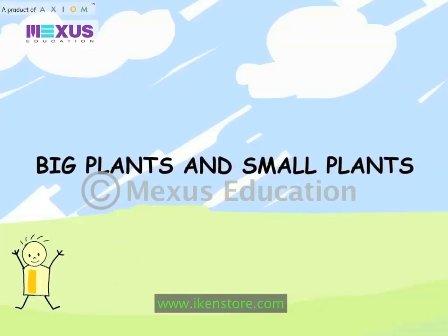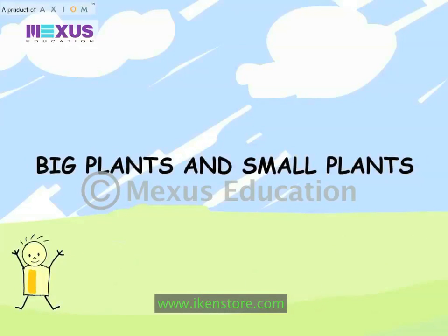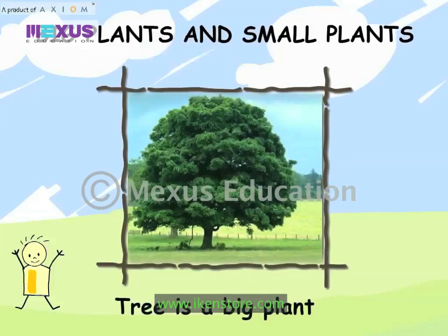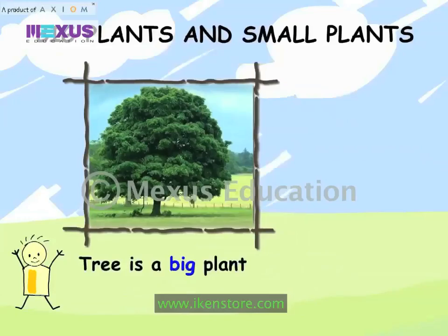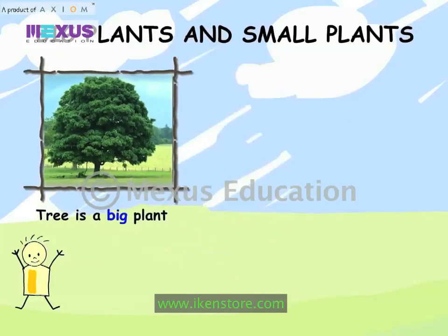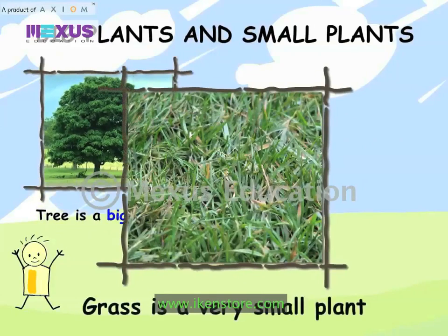Big Plants and Small Plants. A tree is a big plant. Grass is a very small plant.